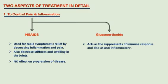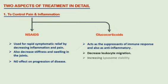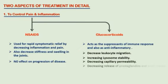Methotrexate is the first drug of choice and is a disease-modifying anti-rheumatoid drug. This methotrexate is used at a much lower dosage — 7.5 mg weekly — than is required in cancer chemotherapy, where the dosage is 30 mg daily.